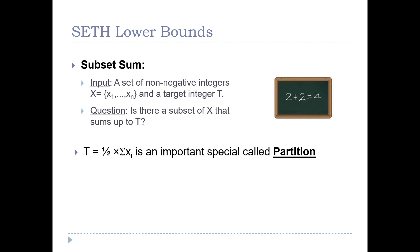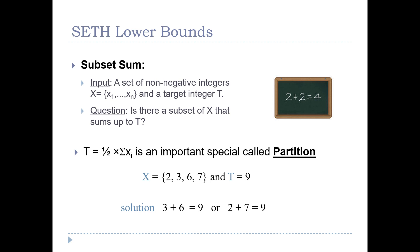Recall that partition is a special case of the subset sum problem, where we are given a set of integers and a target t and want to determine whether there is a subset summing to t. Partition is the special case where t is exactly half the total sum. For example, given the set {2, 3, 6, 7} with target 9, this set can be partitioned into two subsets both summing to 9.